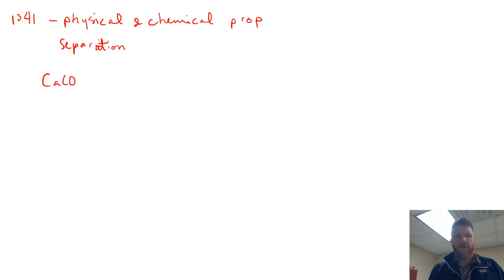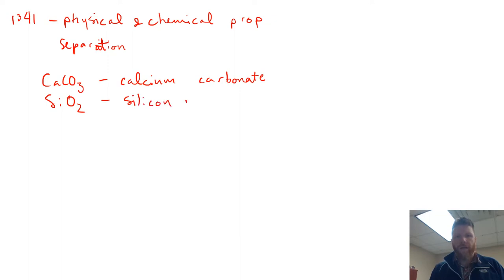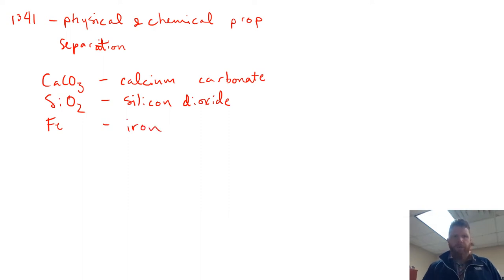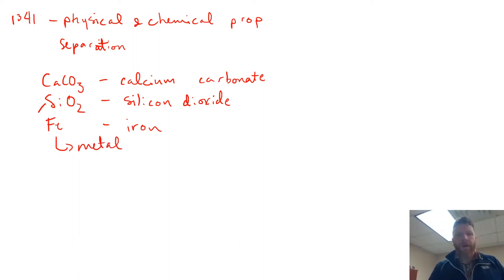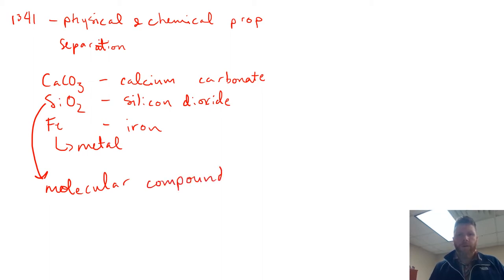In this lab, you're going to be given a mixture of CaCO3 — calcium carbonate. That mixture will also have some SiO2 — silicon dioxide. And finally, you're going to have small pieces of metal or pieces of iron. Iron is a metal found on the periodic table within the transition metals. Silicon dioxide is a molecular compound, and calcium carbonate is an ionic compound.